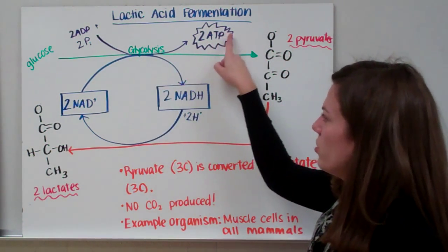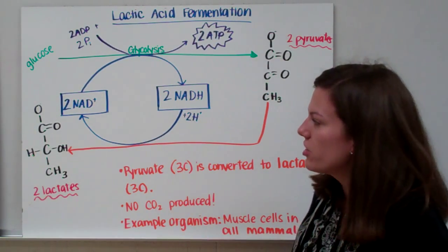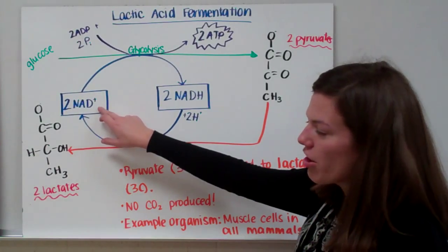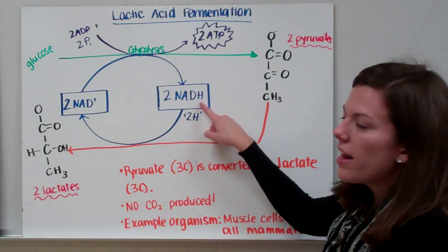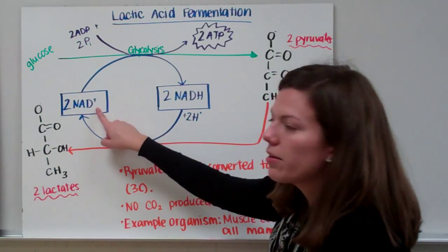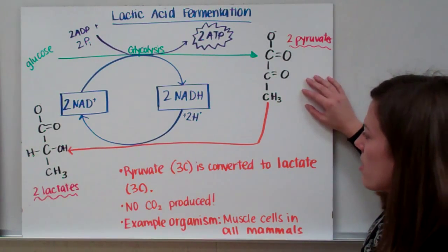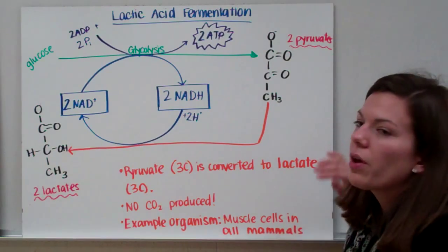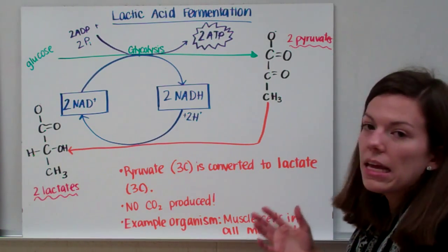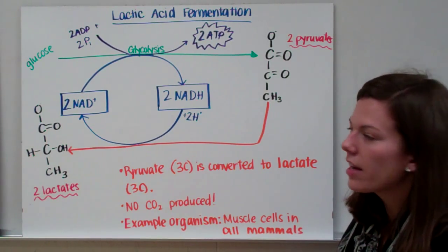Remember, in glycolysis, we're making two ATPs. In this process of lactic acid fermentation, again, we're recycling our NADs. We're losing our electrons, our hydrogens from the NADHs, and we're recycling them back to NADs. So we take our pyruvates from glycolysis, and instead of rearranging them twice like we did in ethanol fermentation, we only rearrange it once. We're not making any carbon dioxide. We're not losing any carbon as a waste product like carbon dioxide gas.